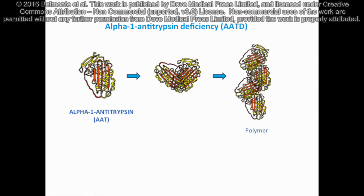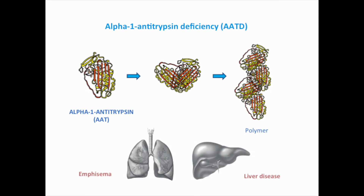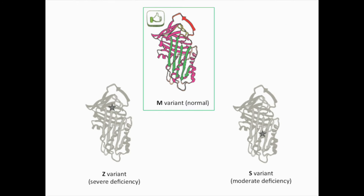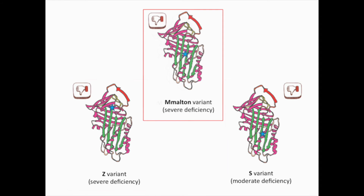Alpha-1 Antitrypsin Deficiency is associated with a high risk for the development of early onset emphysema and liver disease. The most common normal Alpha-1 allele is the M variant, and the most frequent deficient variants in the Caucasian population are Z and S, which can be easily detected. Another deficient variant called M. Malton is considered to be the second cause of severe Alpha-1 deficiency in Spain.